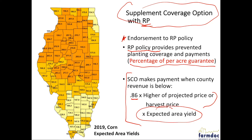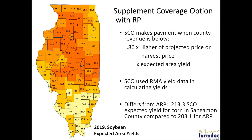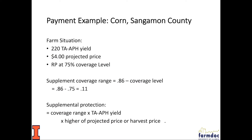The expected area yield is set for each county by RMA. The map over to the left shows those values for 2019 corn. I'm going to give an example for Sagman County, which has a 213.3 bushel expected area yield. SCO uses RMA yield data in its payment calculation. As a result, SCO expected yields vary from those used for ARP — ARP is Area Risk Protection, which uses NASS data — so you will see different expected yields: 213.3 for Sagman County for SCO compared to 203.1 for ARP. The map also gives soybean expected area yields for 2019, which will vary by year.